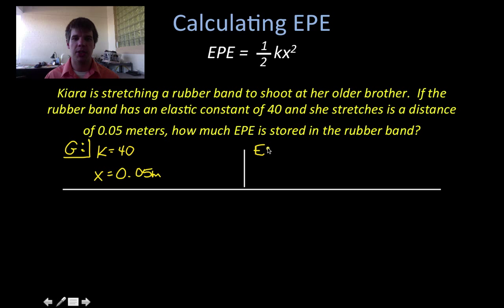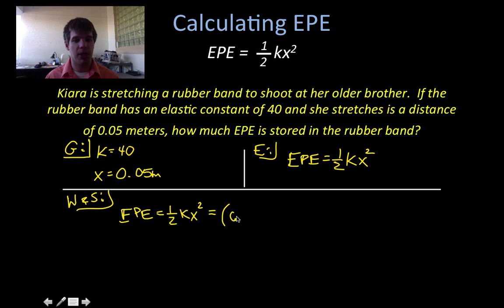We go ahead over here. We write the equation. The equation is EPE is one half the elastic constant times the stretch or compression distance squared. And then when I come down to do the work and the solution, I'm going to rewrite that equation. Elastic potential energy is one half the elastic constant times the stretch or compression distance squared. And now I just start plugging the numbers in. Instead of writing a half, I'm going to replace it with 0.5 because it's just easier when I do the calculations. For the K value, the elastic constant was 40. So I'll replace that with 40. And then the x, the stretch or compression distance, it was stretched out 0.05 meters. And we know that that has to get squared.